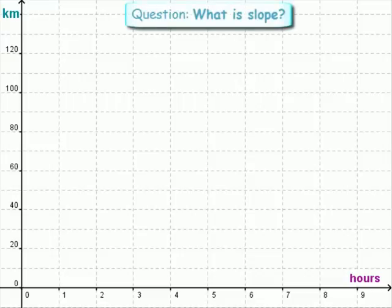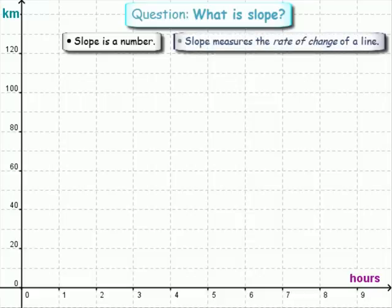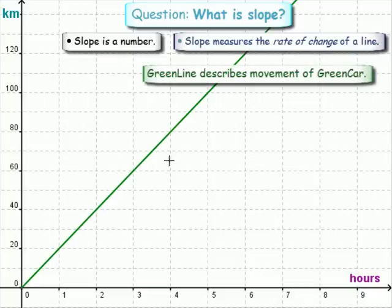Now in our continuing quest to understand what is slope, we are going to look at a line that represents something from real life. Remember, slope is a number and slope measures the rate of change of a line. So let's look at a line that represents something real.